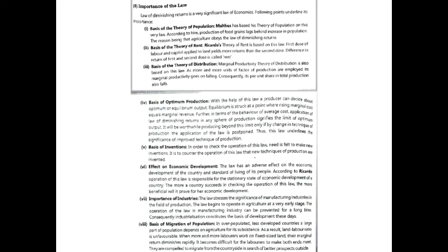As population increases, agricultural production cannot keep pace because the law of diminishing return is applicable to the agriculture sector. The agriculture sector cannot increase production proportionally because land is a fixed factor.